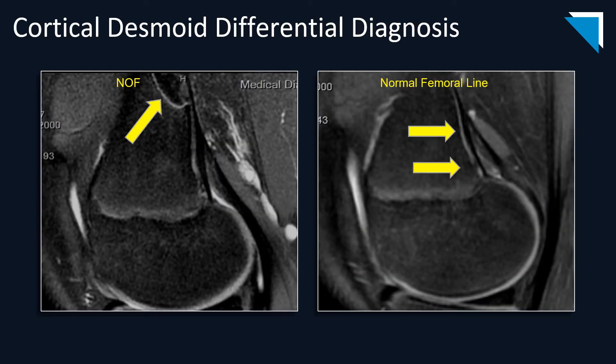On the left, on this sagittal PD fat-saturated image, you can see a non-ossifying fibroma, which is superior to where you would expect a cortical desmoid. On the right, you see a normal femoral line, which is thin hyperintense signal deep to the cortex.